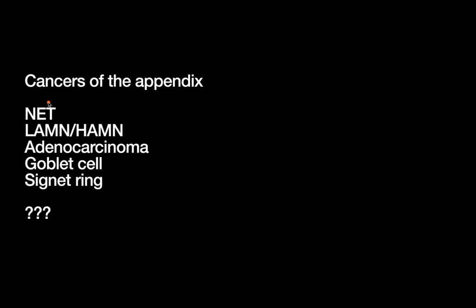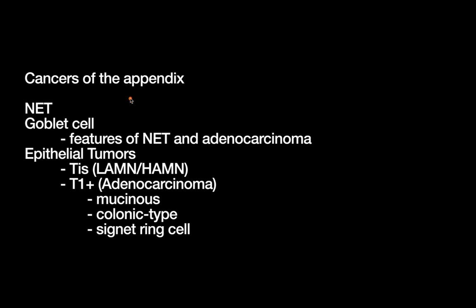So this is where things start to get really confusing. There's this whole alphabet soup of potential cancers of the appendix. We can get neuroendocrine tumors, LAMN, HAMN, goblet cell tumors, signet ring cells, and so on. So how do we keep these all straight? I think first we just need to add some structure to how these names relate to each other. I've roughly ordered these from least to most aggressive tumors.